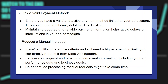If you've fulfilled the above criteria and still need a higher spending limit, you can directly request it from Meta ad support. Explain your request and provide any relevant information, including your ad performance data and business goals. Be patient, as processing manual requests might take some time.